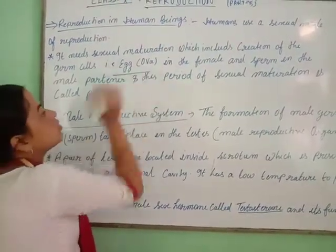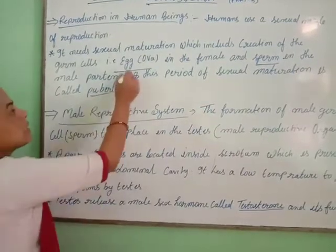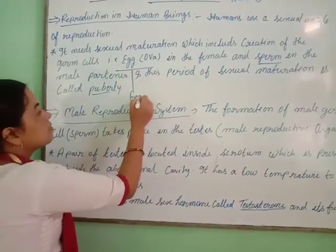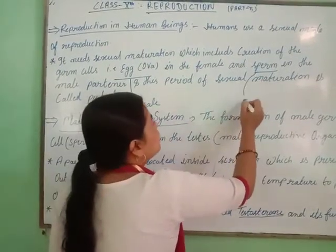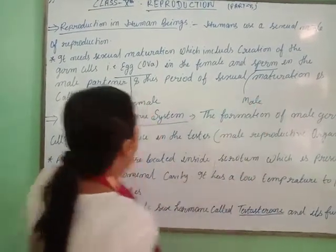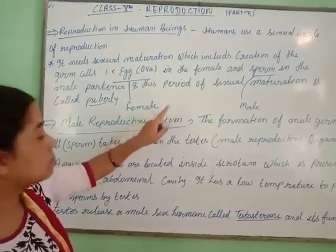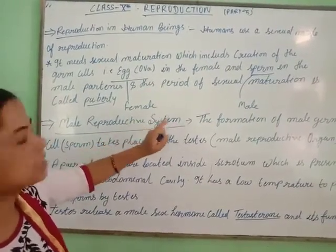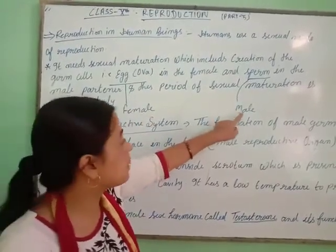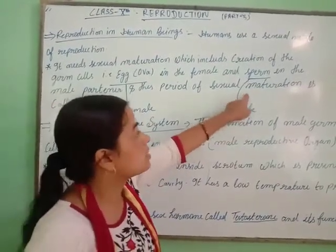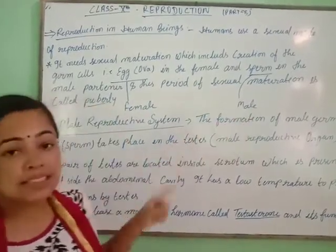Egg and sperm are the two gametes. Egg is the female part and sperm is related to the male. Egg is found in the ovary, which belongs to the female reproductive part, and sperm belongs to the male reproductive part. In the male reproductive part, sperm is found in the testicles and their secretions.